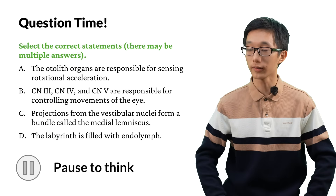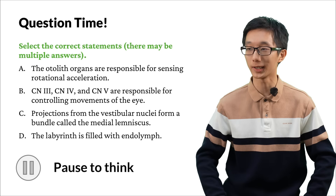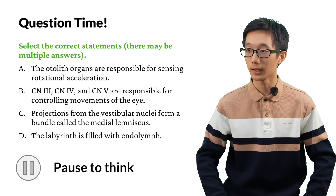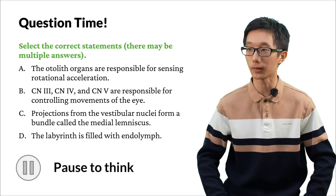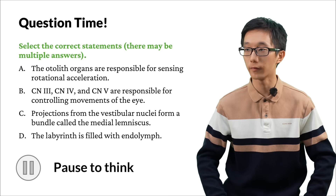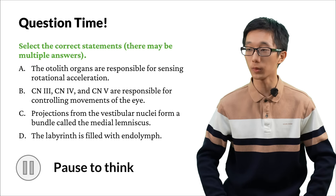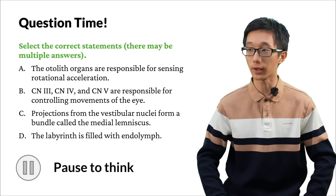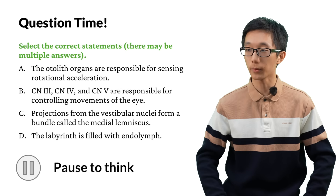Let's start with question time for reviewing the last part. Please select the correct statements. A: The otolith organs are responsible for sensing rotational acceleration. B: Cranial nerves 3, 4, and 5 are responsible for controlling movements of the eye. C: Projections from the vestibular nuclei form a bundle called the medial lemniscus. D: The labyrinth is filled with endolymph.